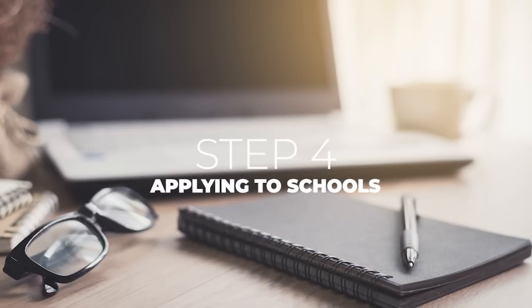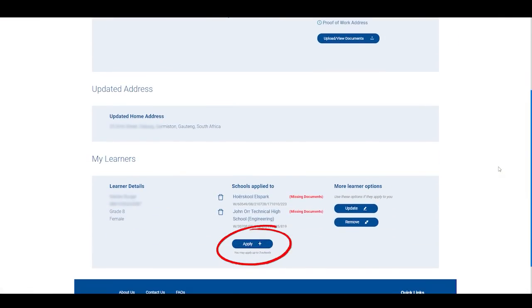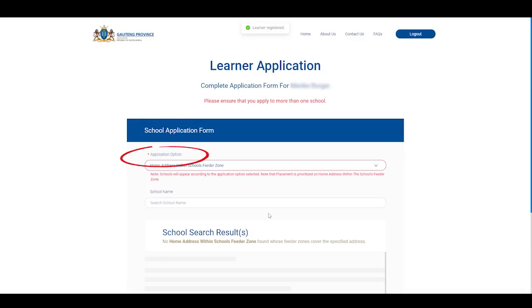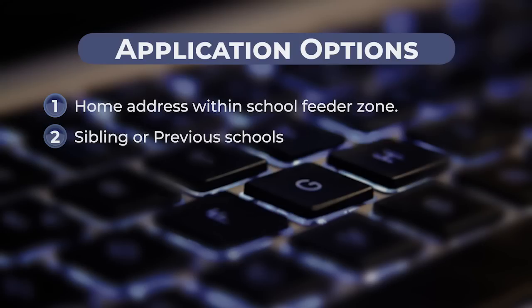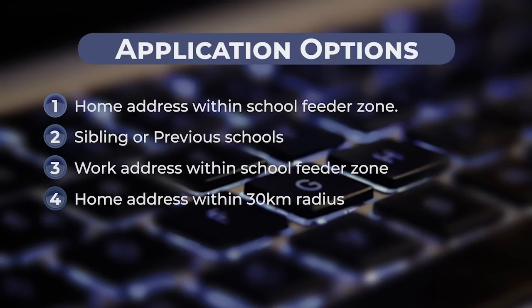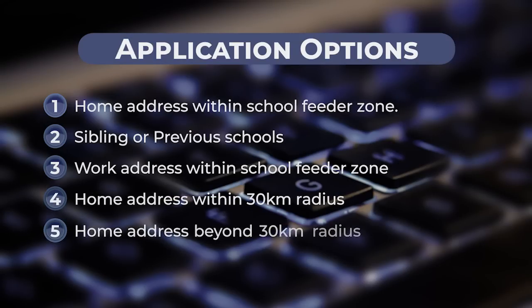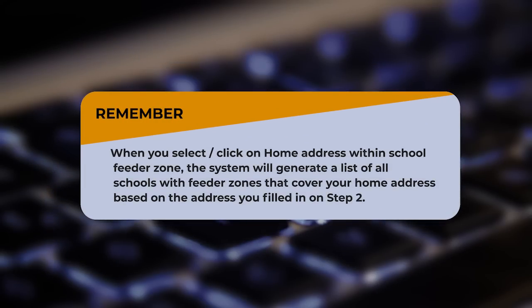Step four is applying to schools. In this step you need to apply to schools by completing the school application form online. When applying to a school it is important to remember that the following criteria are taken into account, shown here in order of priority: number one, home address within school feeder zone; number two, sibling or previous school; number three, work address within the school feeder zone; number four, home address within a 30 kilometer radius; number five, home address beyond a 30 kilometer radius; number six, schools of specialization. When you select home address within school feeder zone, the system will generate a list of all schools with feeder zones that cover your home address based on the address you filled in in step two.